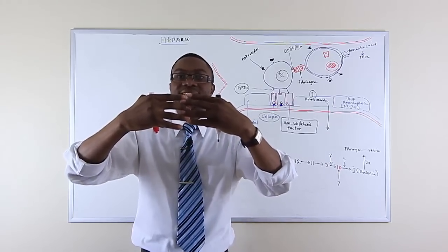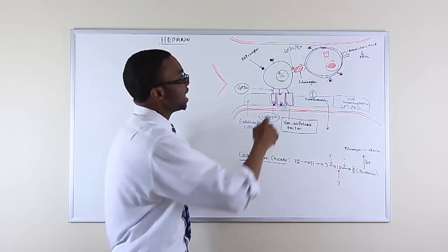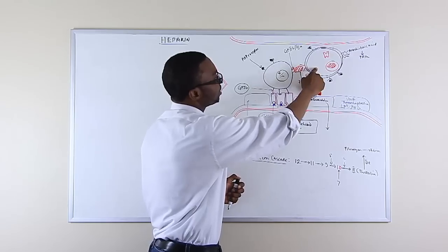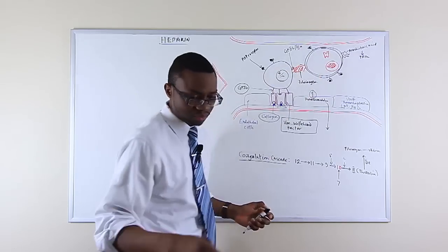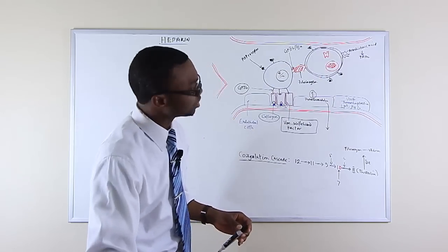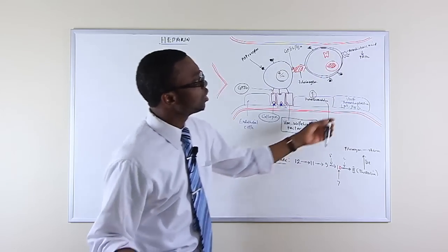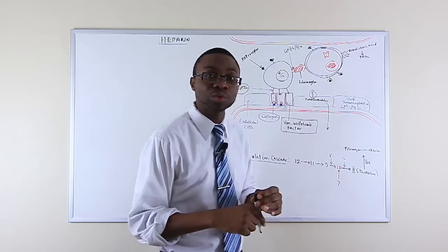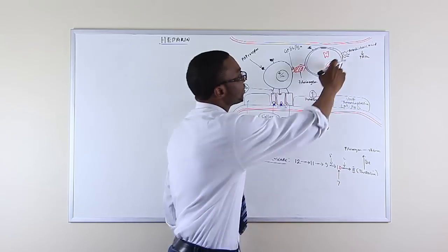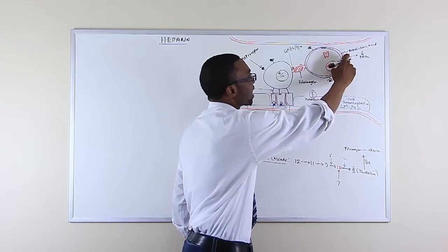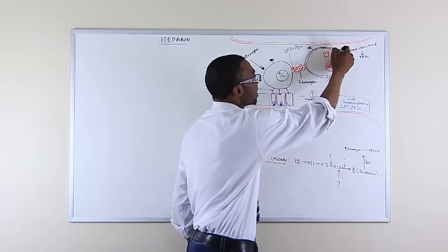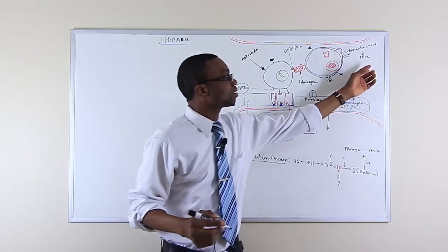In order for platelets to join together, fibrinogen — which is made inside the platelet — is what keeps the two glycoprotein 2B and 3A together. That's platelet adhesion. Now they've adhered to each other, and you've got platelets joining up. There's also thromboxane A2, made from arachidonic acid from the membranes of the platelet.